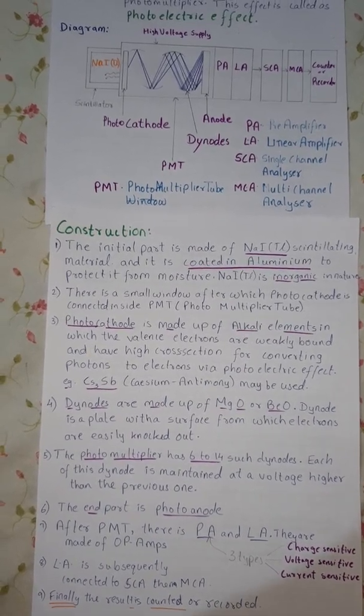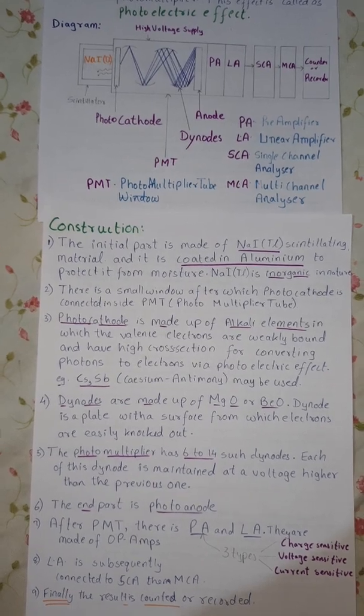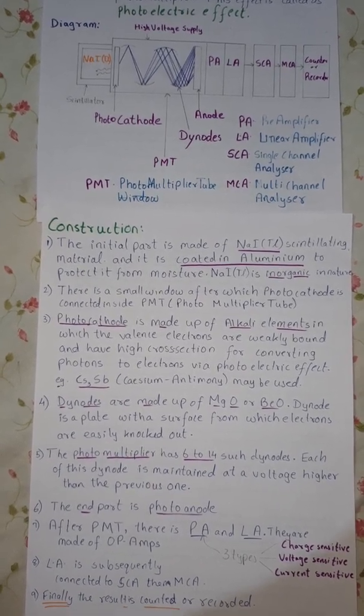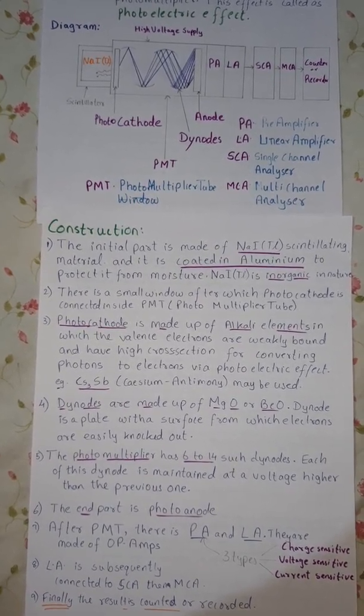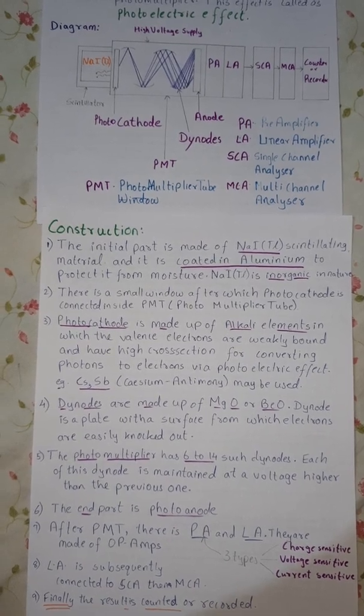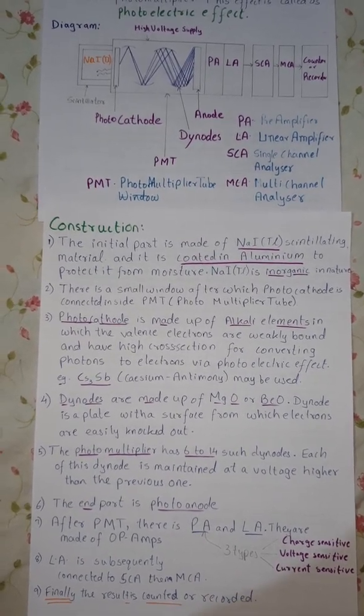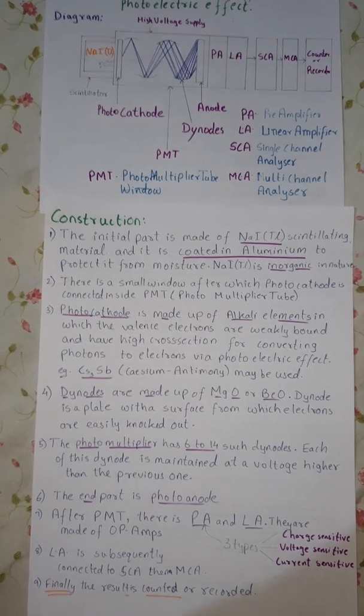This photocathode is made up of alkali metals in which valence electrons are weakly bound and have high cross section for converting photons to electrons via photoelectric effect. If there is one electron in the outermost shell, it is easy to remove that electron. For example, we can use CS3SB that is cesium antimony.